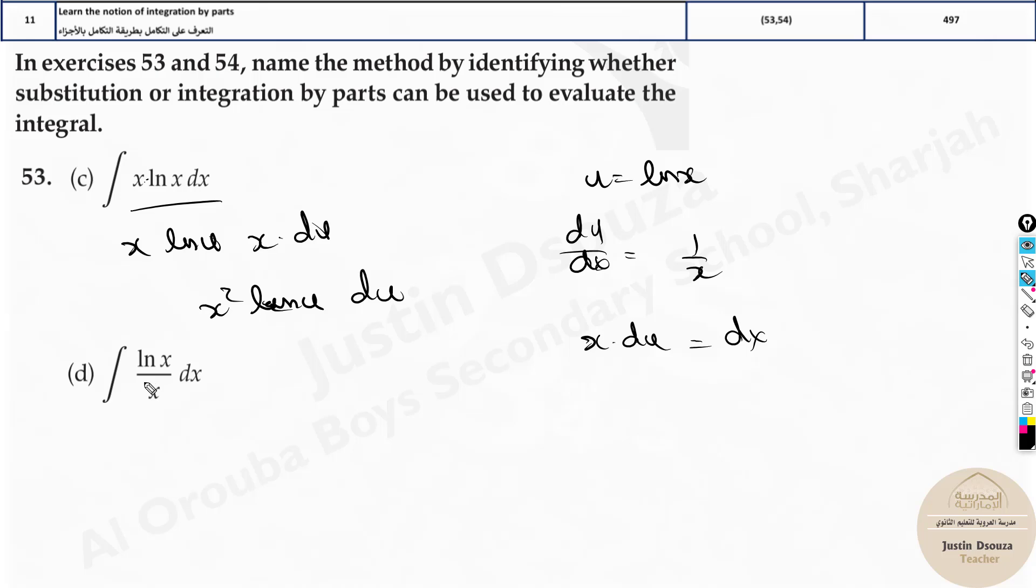But here, we can do u substitution. Why? Because if you take, instead of ln x as u, ln x over u, not x as u, you're taking the entire natural logarithm x as u divided by x.